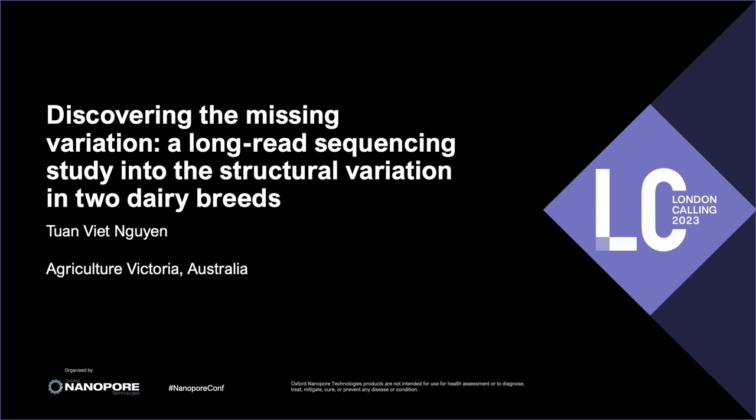Hello everyone, my name is Tung, currently a research scientist at Agriculture Victoria focused in dairy genomics. In this talk, we will explore the discovery of structural variants in Bos taurus and related cattle using very early data. Let's dive in!